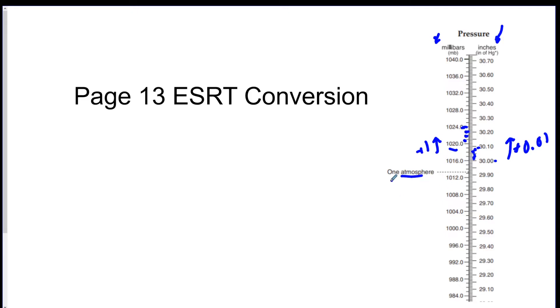1 atmosphere is the pressure at sea level. And this is right up here. 1,013.2 about millibars. And then that's equivalent to 29.92 inches of mercury.